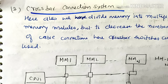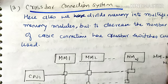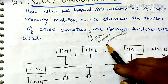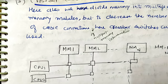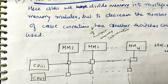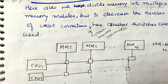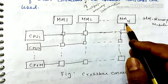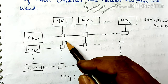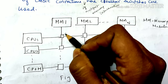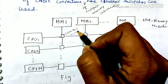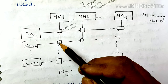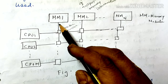The interconnection structure for multiprocessor systems is the crossbar connection system. Here, memory is divided into multiple memory modules, but to decrease the number of cable connections compared to multiport memory interconnection, crossbar switches are used. With m CPUs and memory modules, each CPU is connected to a memory module via crossbar switches, which provide the CPU-to-memory-module connection.